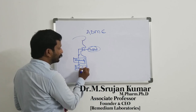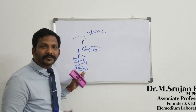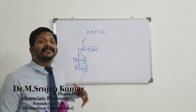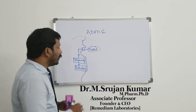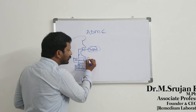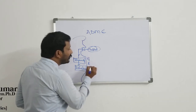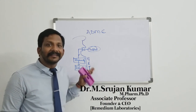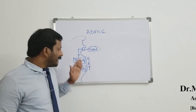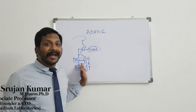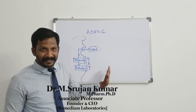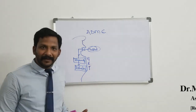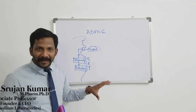This is what we know — intestine, nothing but your small intestine followed by your large intestine. Where does this absorption take place? Absorption will take place throughout the length of the GIT, which is nothing but the gastrointestinal tract. That means any drug, in order to enter into your systemic circulation, it has to pass through your GI membrane or GI barrier.